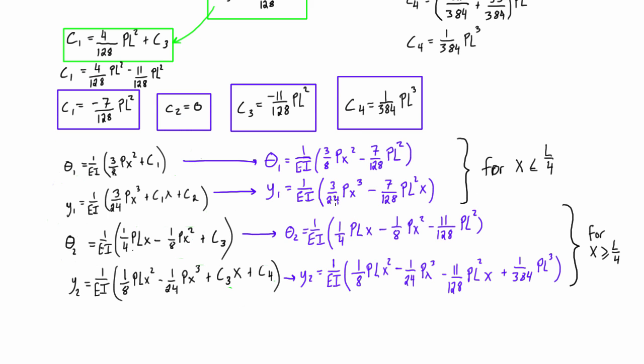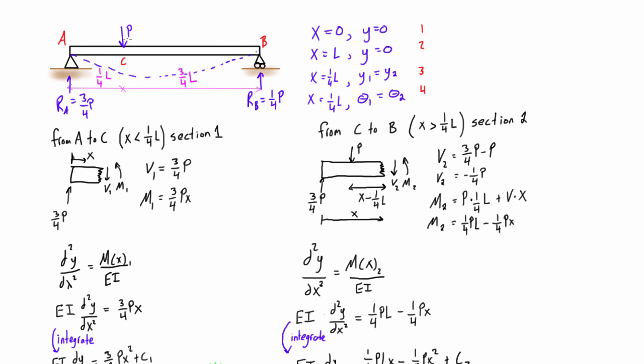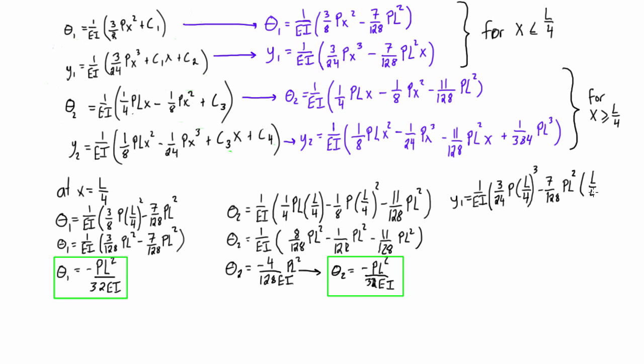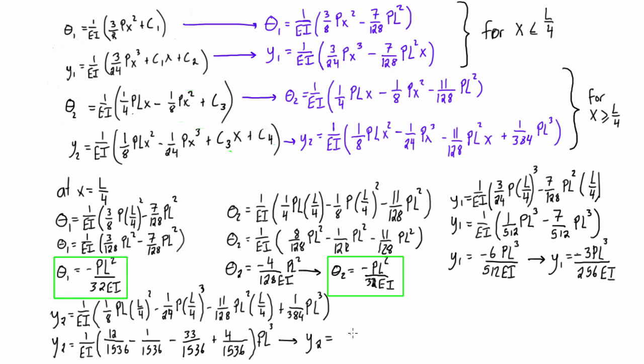And now we have two separate expressions for the displacement at any point in the beam. So for those areas where x is less than L over 4, and then for those areas where x is greater than L over 4. And then also we have two different expressions for the slope on either side of that L equals 4. And I'll just show you down here really quickly that we can use either of them to calculate the slope or displacement at x equals L over 4. Because if you remember, that was the original goal of our problem, to find the displacement and slope at point C. So if we do that from either side, we get theta at x equals L over 4 to be negative PL squared over 32 EI from either side. And also from either side, we calculated it for the deflection, y at x equals L over 4 to be negative 3 PL cubed over 256 EI.